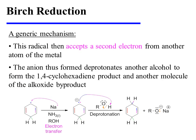The radical then accepts a second electron donated from another atom of the neutral metal. The anion thus formed deprotonates another alcohol molecule to form the product, a 1,4-cyclohexadiene, and another molecule of the alkoxide byproduct.